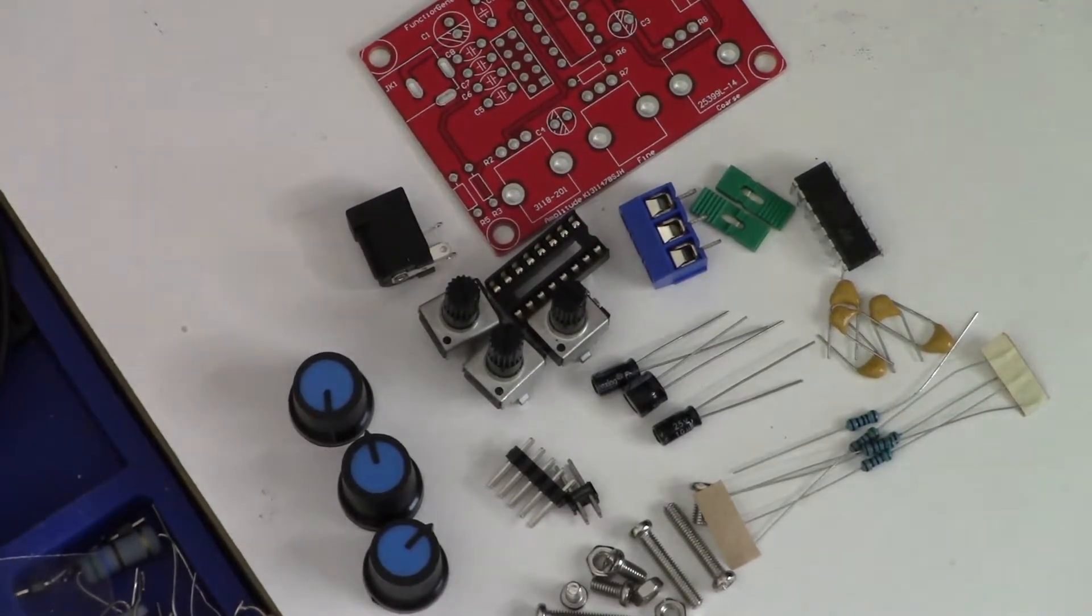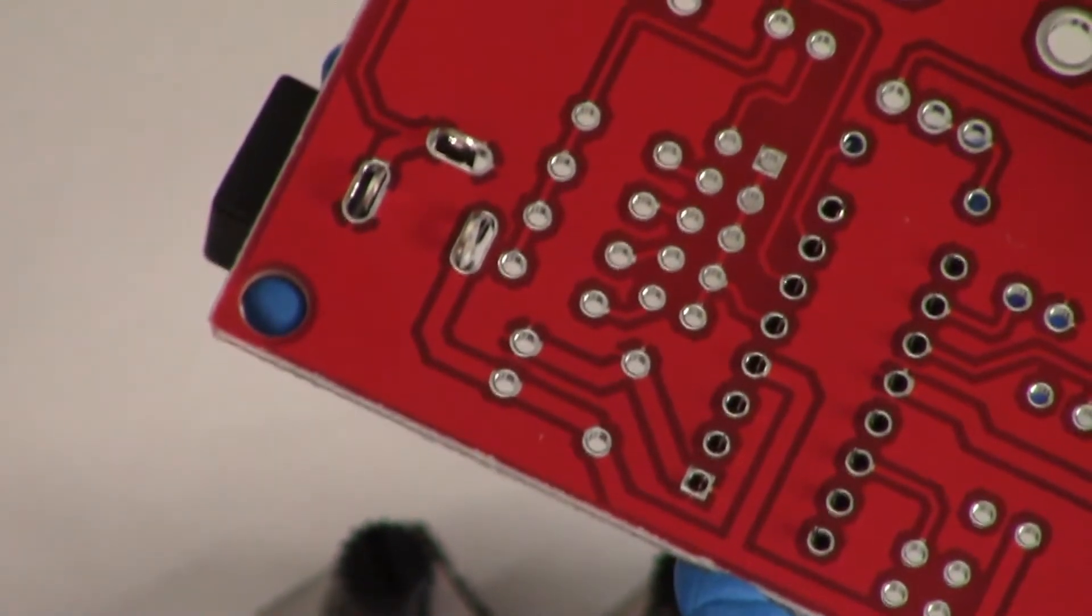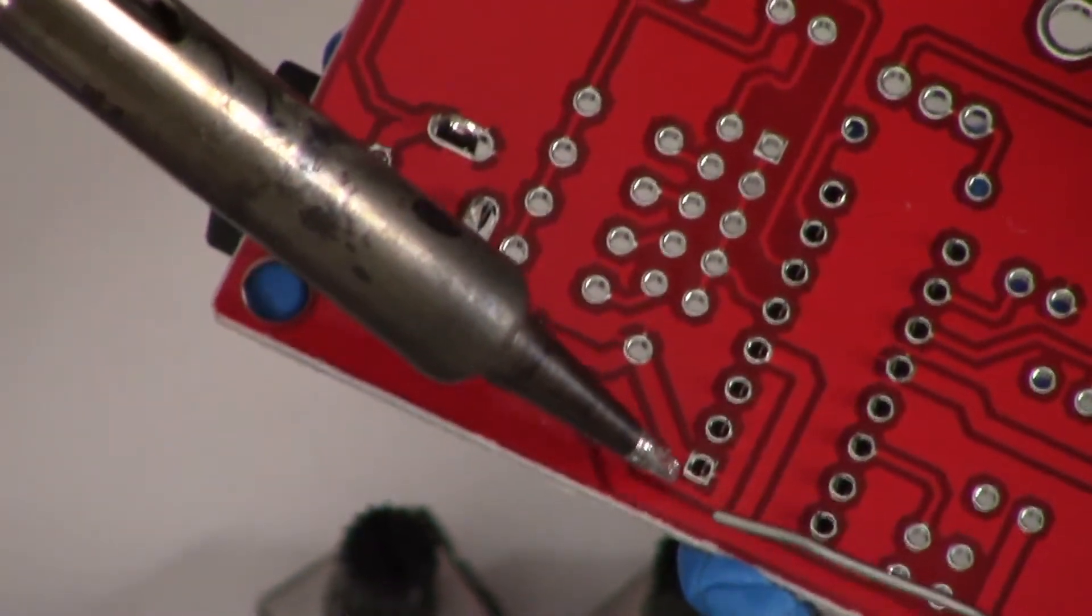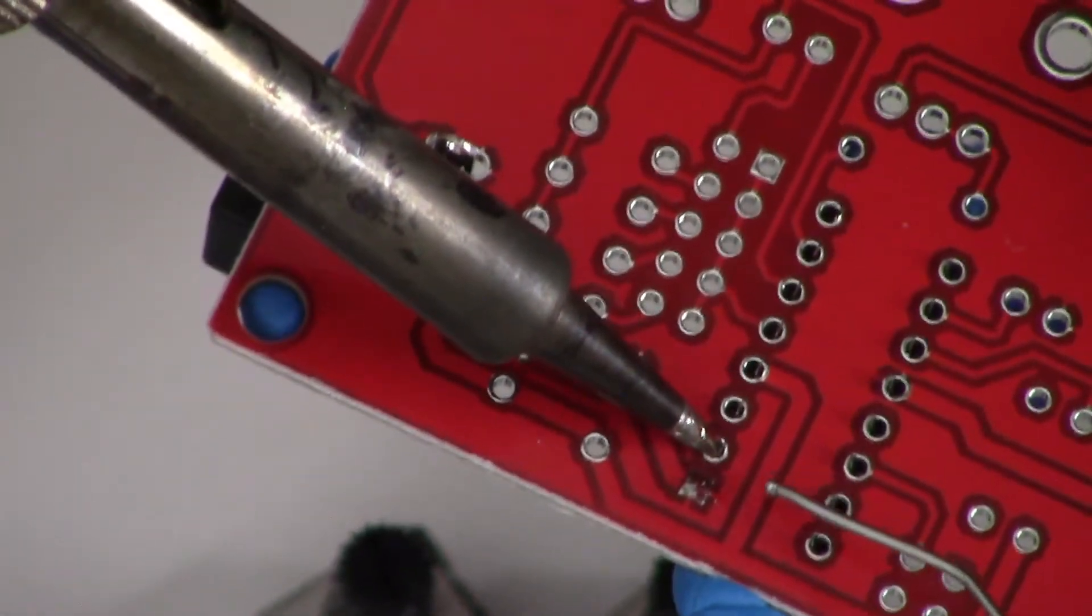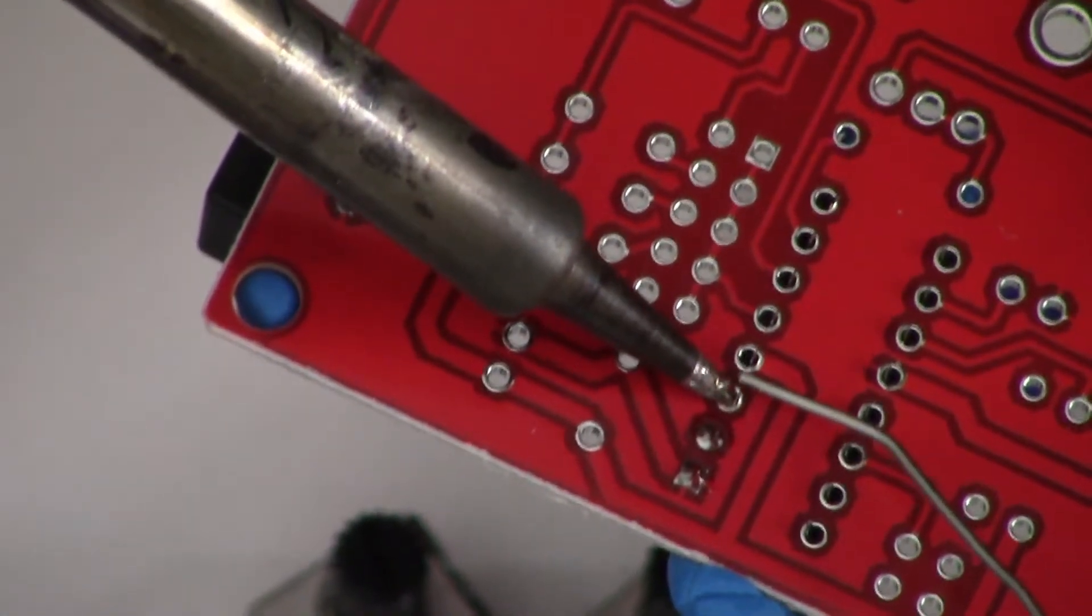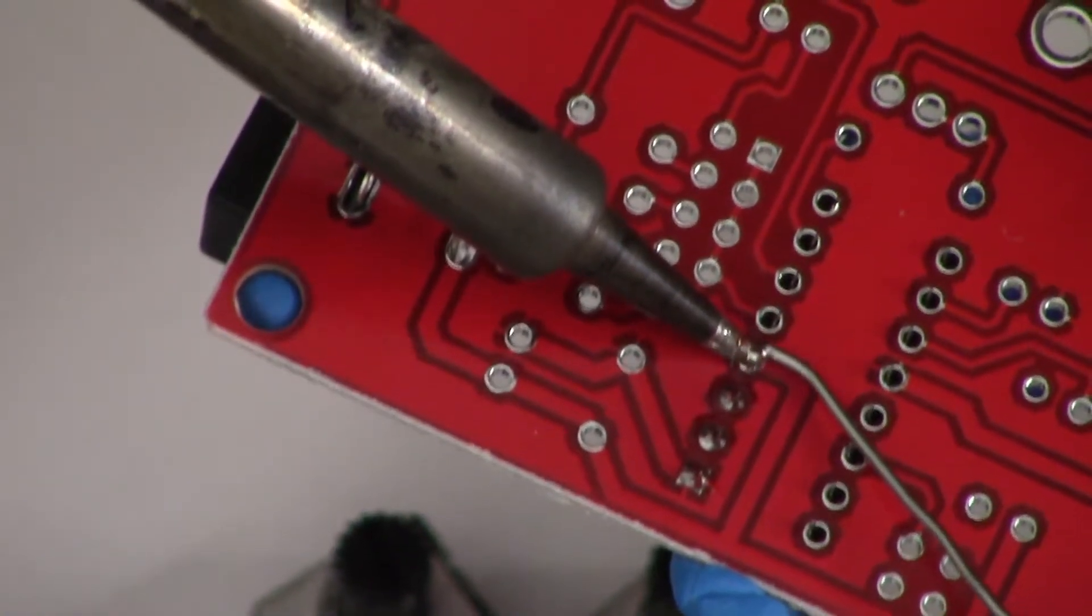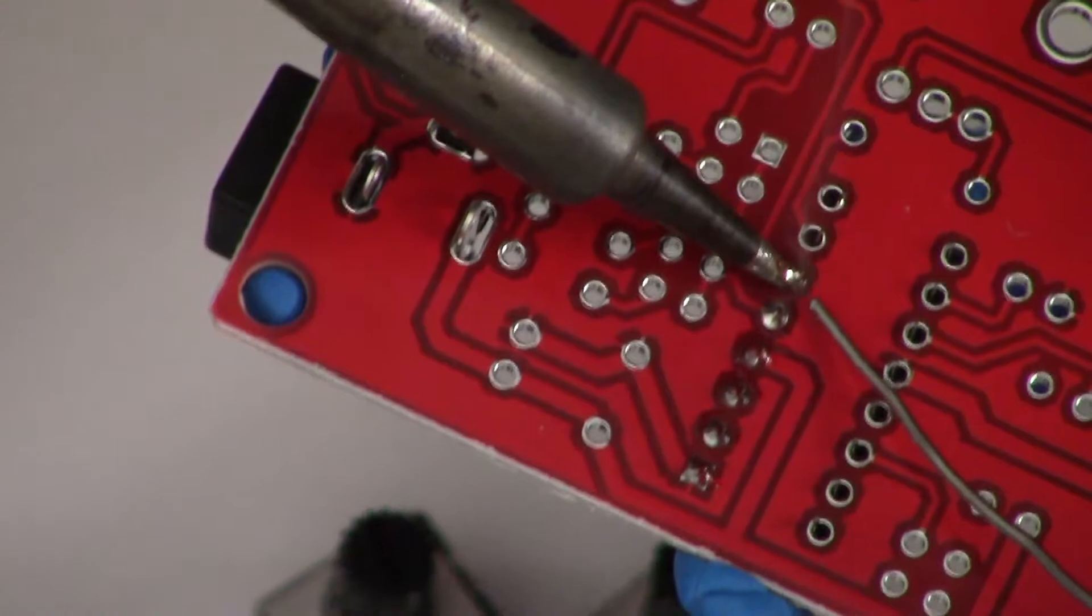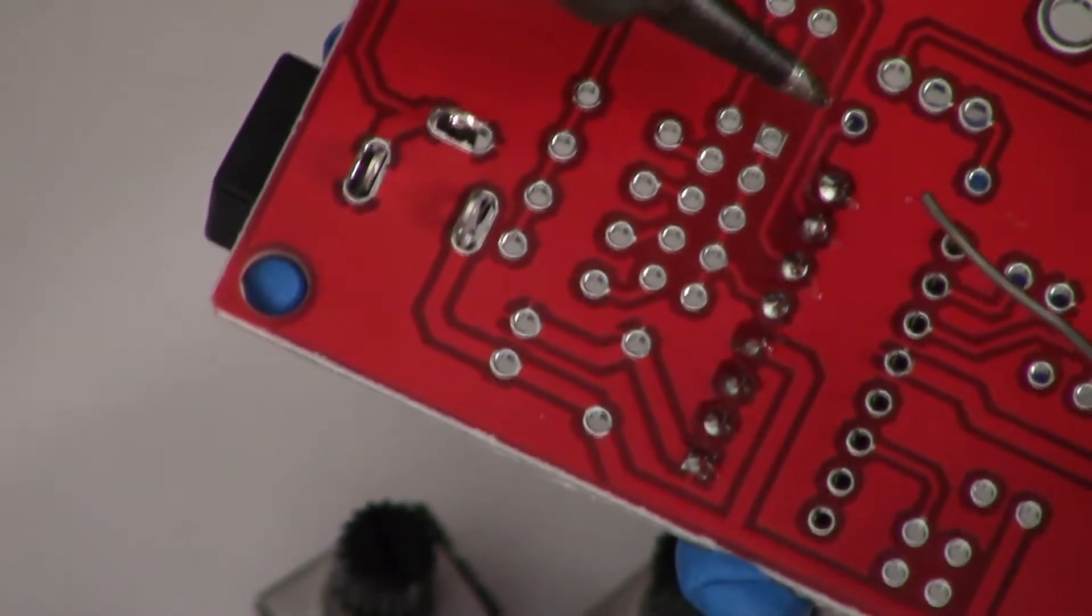Alright guys, so initially I wasn't going to show any soldering, but as you can see, I am going to show some soldering. We're just going to solder the DIP socket for the IC and the barrel connector for the power supply. I think that should be enough, just a little taste.